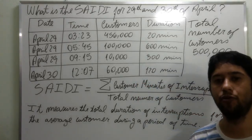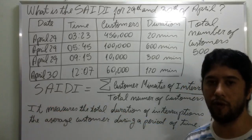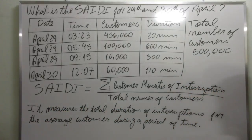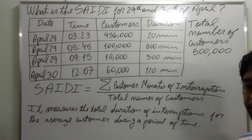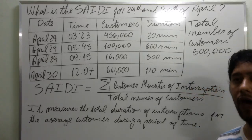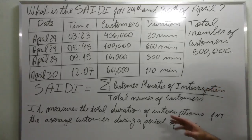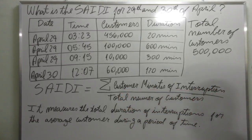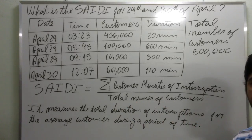Before going to the exercise, let's review what SETI is. SETI is the System Average Interruption Duration Index and it measures the total duration of interruptions for the average customer during a period of time. This period of time can be a day, a week, a month or a year. We calculate this index using the expression provided by IEEE: we compute the customer minutes of interruption and divide by the number of customers of that area of concession, of that utility.